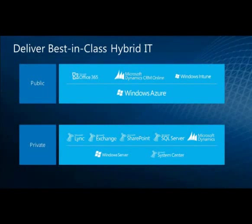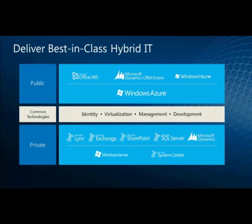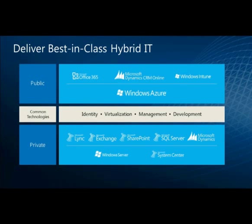We've got application services such as productivity services like Office 365 or business applications like Microsoft Dynamics, available both on-premises and in public clouds. But what's really unique about Microsoft's strategy is what we call common technologies: common identity, common virtualization, common management, and common development. These tie together both platforms and make our approach to hybrid IT very unique.